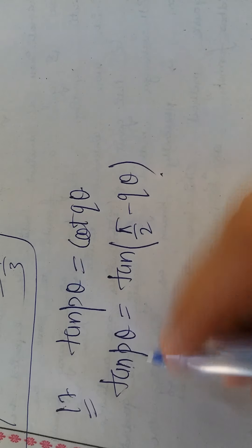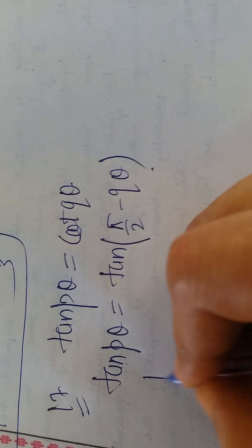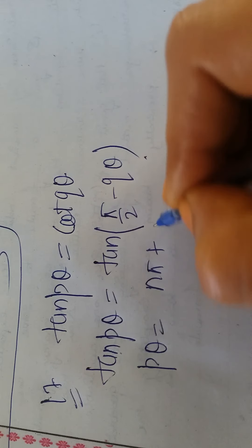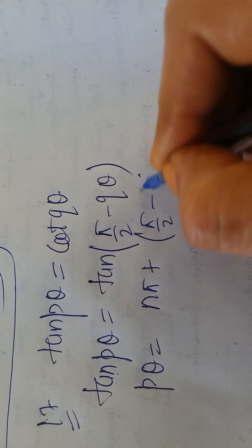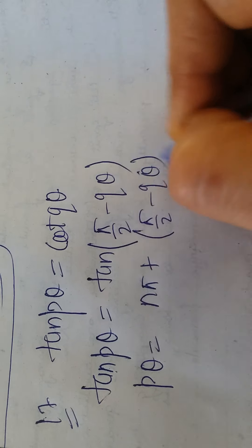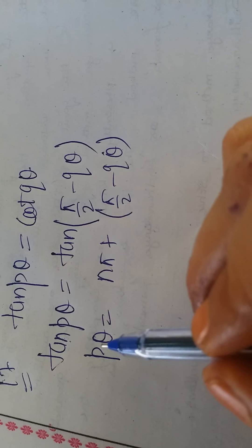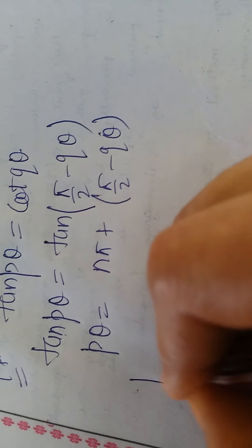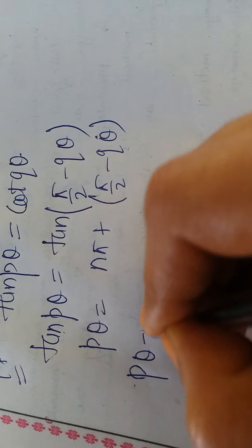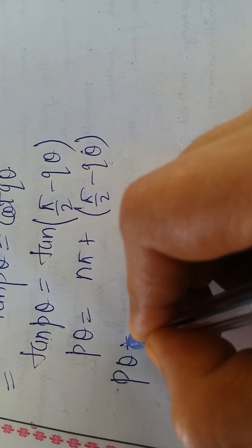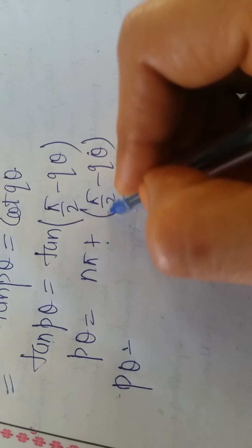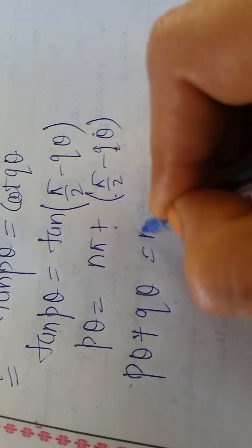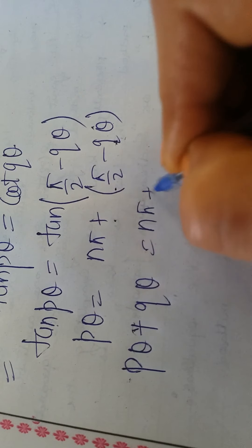Now applying tan(θ) = tan(α) ⟹ θ = nπ + α: pθ = nπ + (π/2 - qθ). Since we can't find θ in terms of θ directly, shift qθ to the left: pθ + qθ = nπ + π/2.